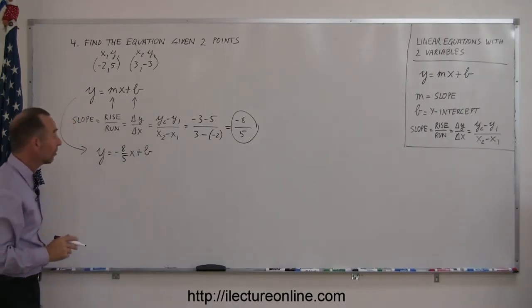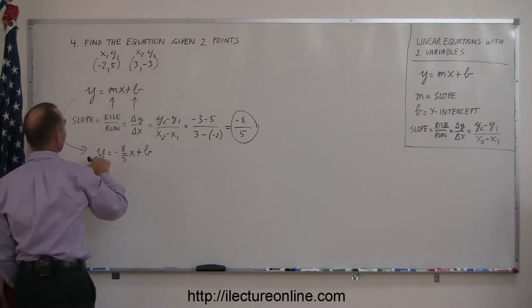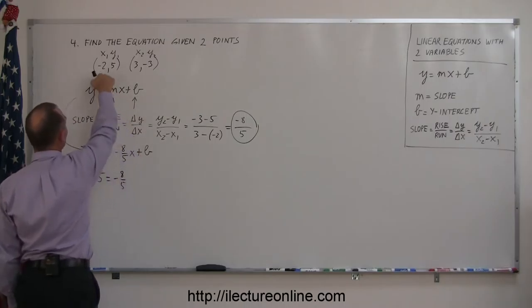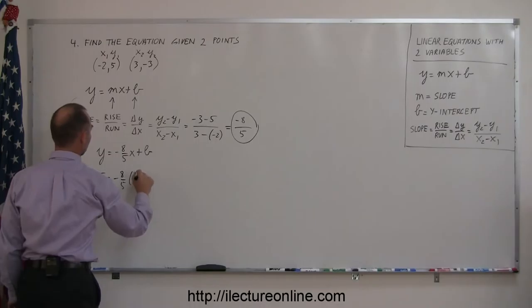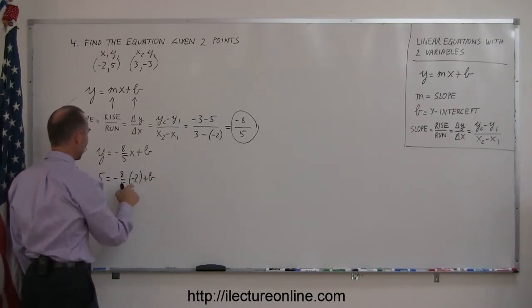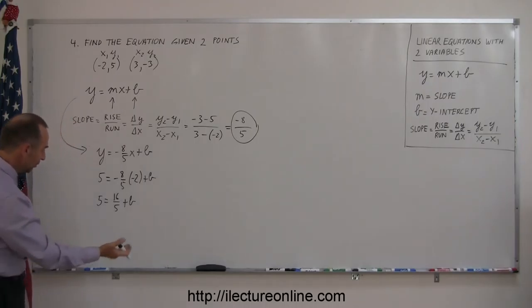The next thing to do is to find the intercept. The key there is to take one of the two points, let's say negative 2 and 5, and plug in to y and x right here. So y is 5, x is negative 2: 5 equals negative 8 over 5 times negative 2 plus b. So we have 5 equals positive 16 over 5 plus b.